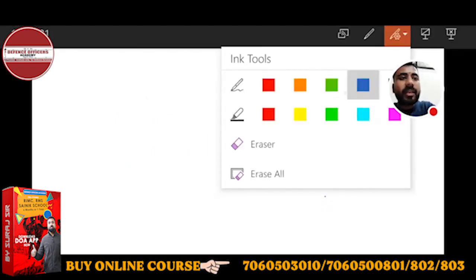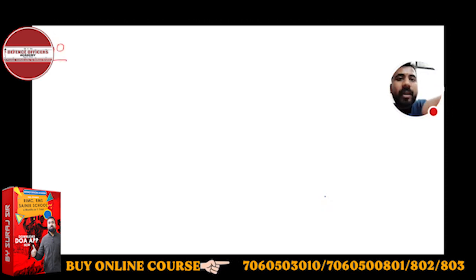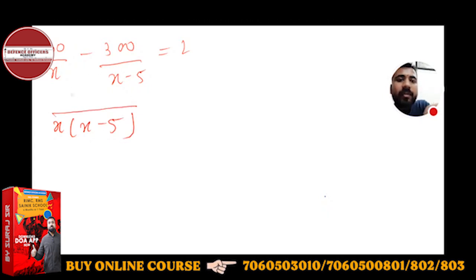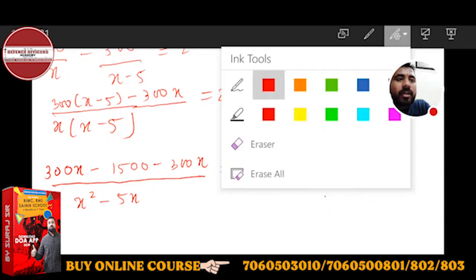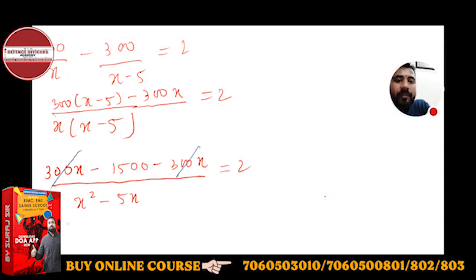The equation was: 300 upon x minus 300 upon (x plus 5) equals 2. Taking LCM as x(x plus 5), the numerator becomes 300(x plus 5) minus 300x equals 2 times x(x plus 5). Solving: 300x plus 1500 minus 300x equals 2x squared plus 10x. The 300x terms cancel, leaving minus 1500 equals 2x squared minus 10x.